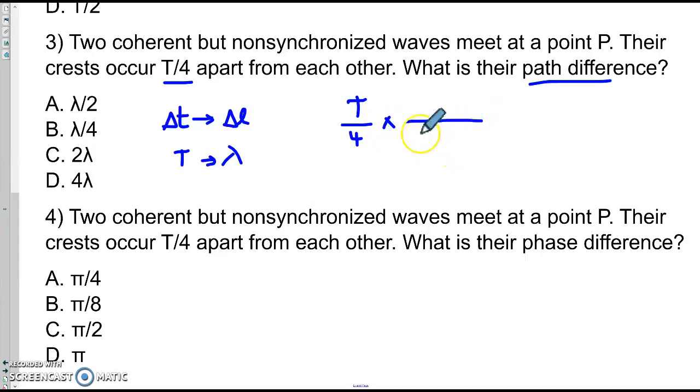And we say, well, we're trying to cancel out time, so how much time makes one cycle? A period. We're converting into lambda, or distance. How much distance makes a full cycle? Lambda. The T cancels, and we have lambda over 4.